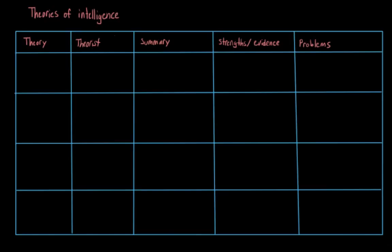There are a number of different theories about what intelligence is and how to define it, but before I get into that, I want to talk about a debate that pervades all of these different theories — and that's the question of whether or not there's one general intelligence, or whether intelligence has multiple aspects, or whether there are multiple intelligences. As we go through all of these different theories, I want you to keep that debate in mind and really think about where each theorist stands on it.